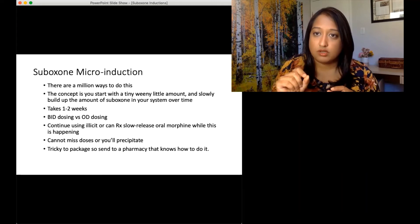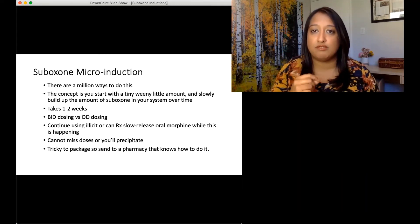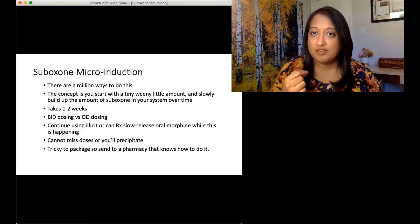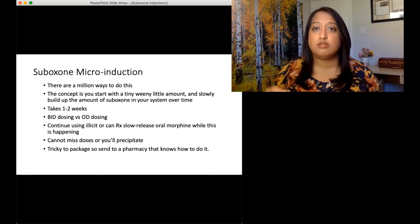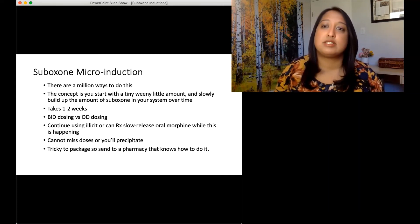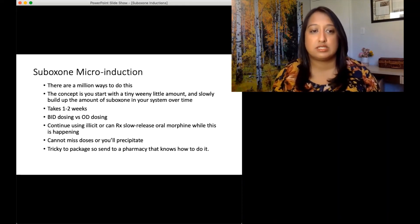But one of the ways would be to take a two milligram tab, cut it into four, so into quarters. So a quarter of a two milligram tab on the first day, that's 0.5 milligrams of Suboxone. Then on the second day, you can take 0.5 milligrams twice a day. Then on the third day, you take maybe one milligram twice a day, so a half a tab twice a day. And you just slowly increase that dose of Suboxone in the system.